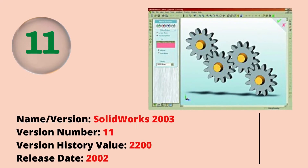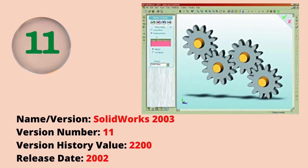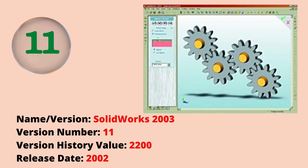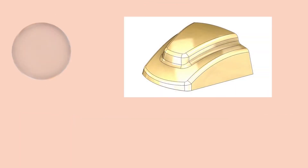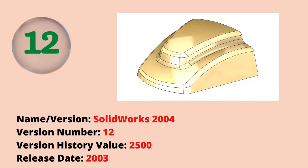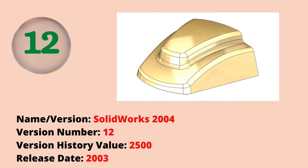The eleventh version was SOLIDWORKS 2003 with a version history value of 2200. The release date was 2002. The twelfth version was SOLIDWORKS 2004 with a version history value of 2500. The release date was 2003.